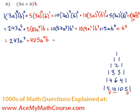Now, plus 10 times 27, 270, a to the 3, b squared. 10 times 9 is 90. So we get 90 a squared, b cubed.